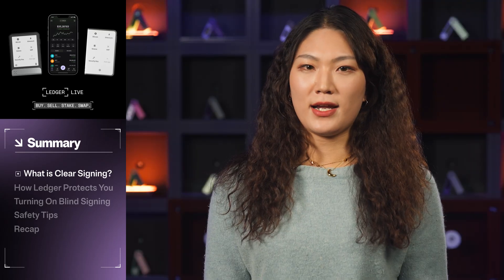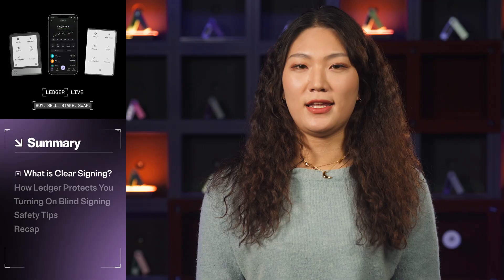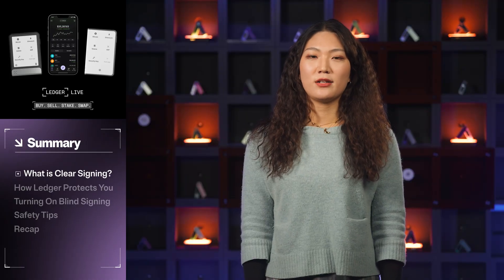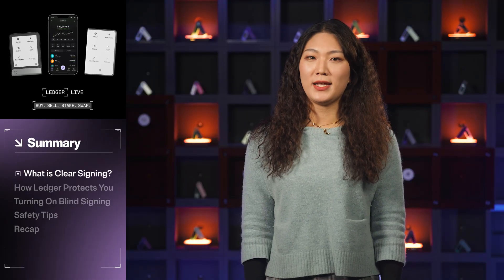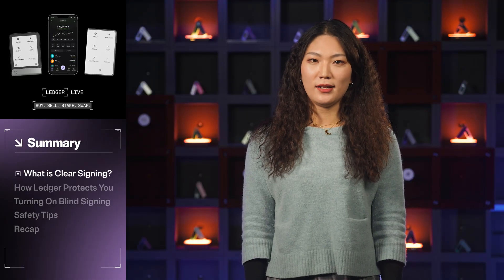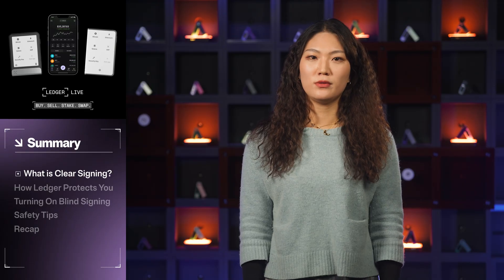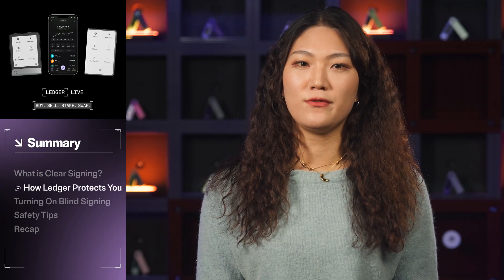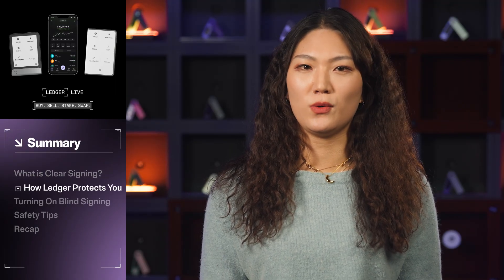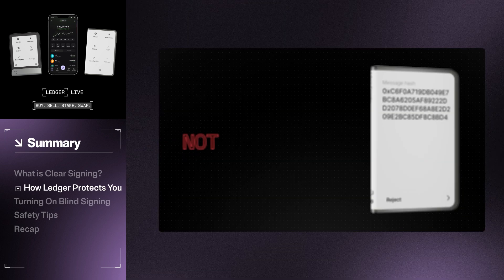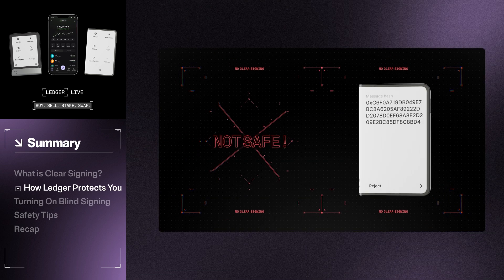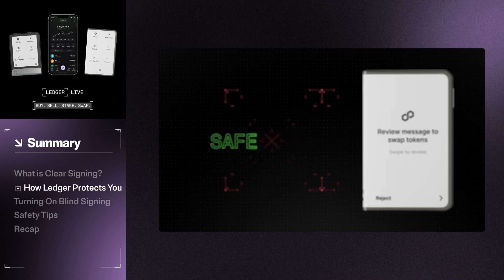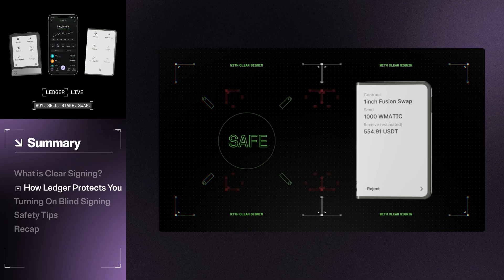Clear signing provides the solution to blind signing in two ways. Firstly, it displays what kind of approval you're being asked to sign and which dapp is seeking approval. Secondly, it displays human-readable transaction fields that show the intended recipient and the assets involved. All Ledger devices protect you from blind signing with clear signing enabled by default.